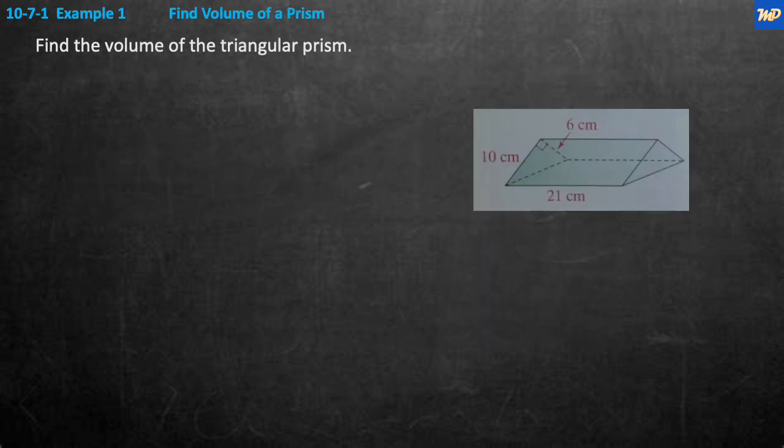Example 1: finding the volume of a prism. Find the volume of the triangular prism shown here on the right. If we investigate it, we see it is definitely a triangular prism. It has two bases and a lateral area around it. We see the length of this prism is 21 centimeters. If we look at this triangle here, we have a 90 degree angle in the back. So the base could be 10 and the height would be 6. Let's go with those numbers.